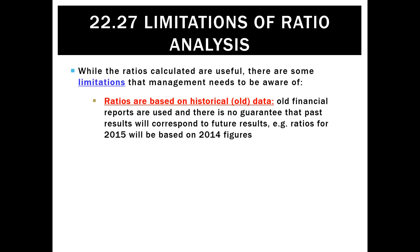First of all, we need to be wary that any ratio we use is actually going to be based on old data. Because we get these numbers from last period, by the time they're published they're already out of date. For example, the numbers that we're calculating in 2015 we won't actually use until 2016. That means those numbers are out of date as soon as they happen.